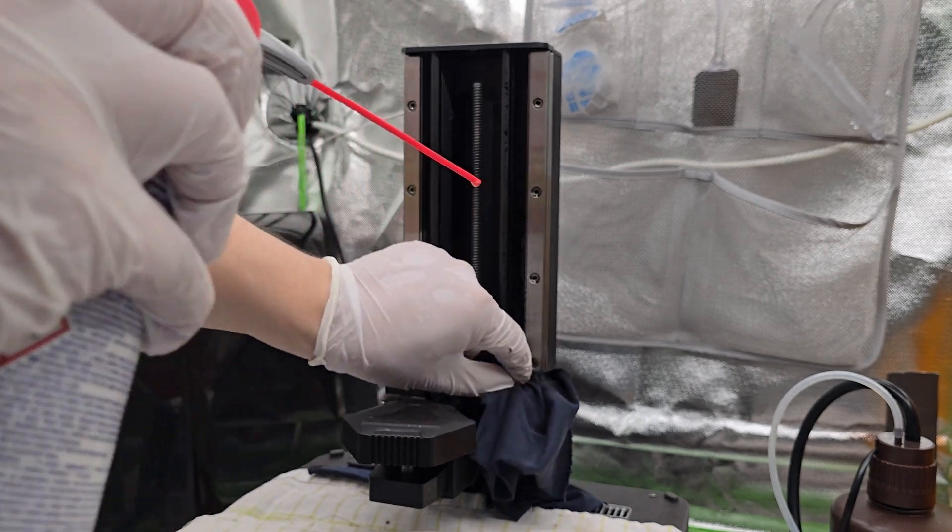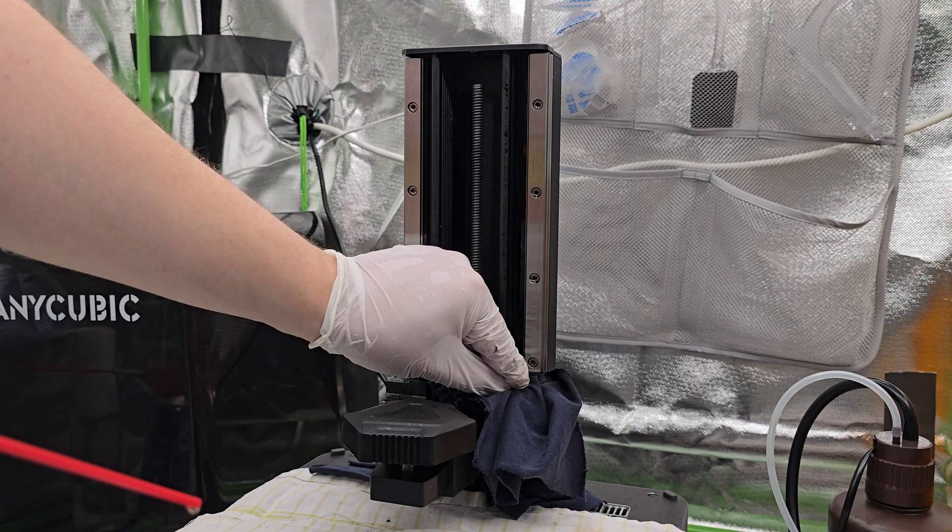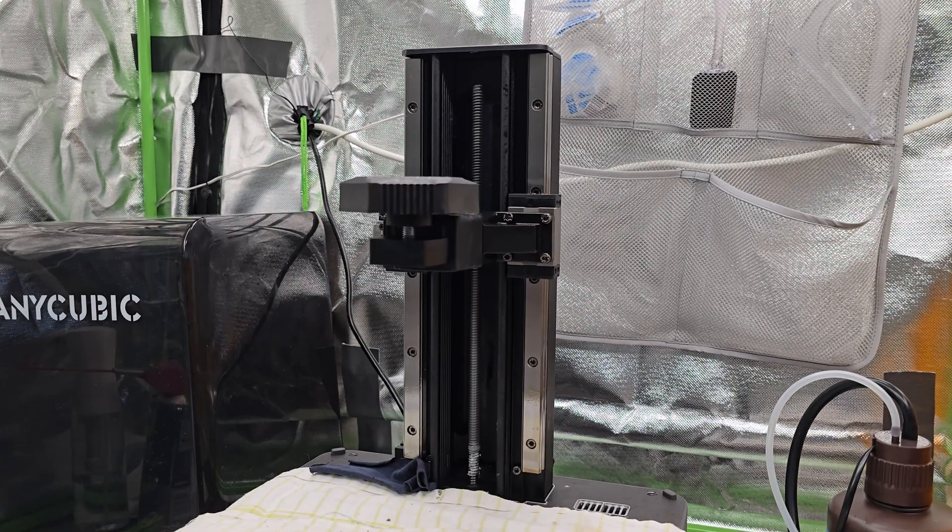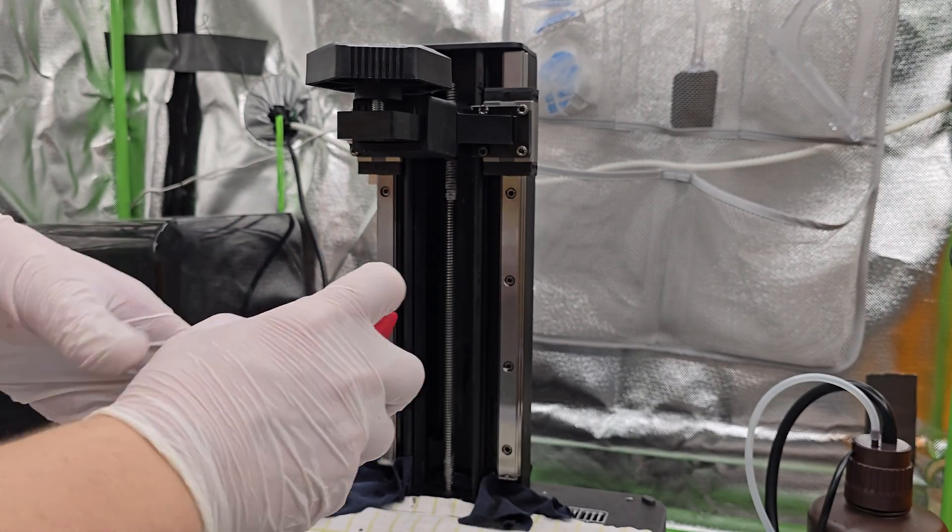Personally, I have always used WD-40 that I showed you and I never had any problems. After applying lubricant, move the platform up and down a few times to spread it evenly. You can stop it then at the top and repeat the whole process on the bottom section of the rails.